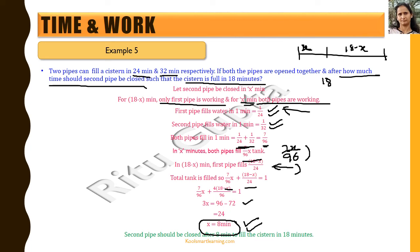These examples give a flavor of the different types of time and work questions. There could be other things to find out, but the concept remains the same: first find the work done per unit time, then perform addition or subtraction operations on that, and work through to find the remaining details.